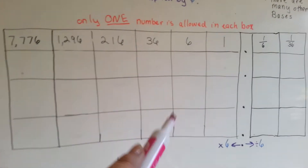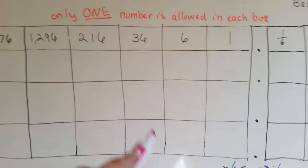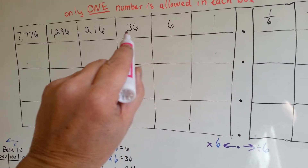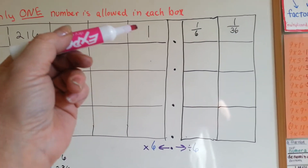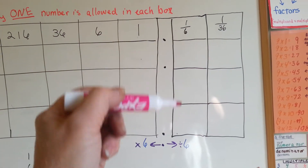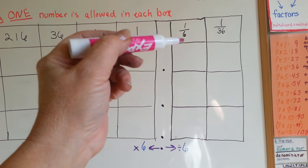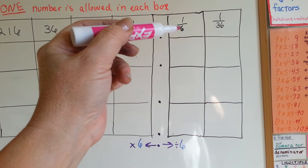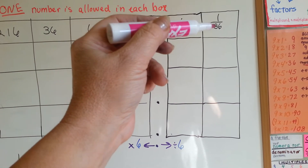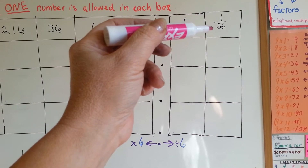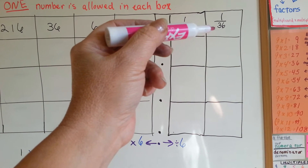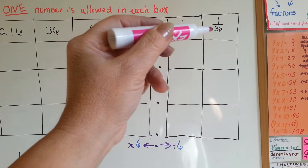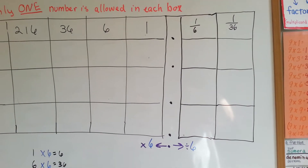So, as I said before, going to the left we're going to multiply each by 6; going to the right, we're going to divide by 6. So we have 1/6 — this would normally be where 1 tenth would be — and normally this would be where 1/100th would be in base 10 that we use every day. But in base 6, it's 1/6 and 1/36. We're dividing by 6.